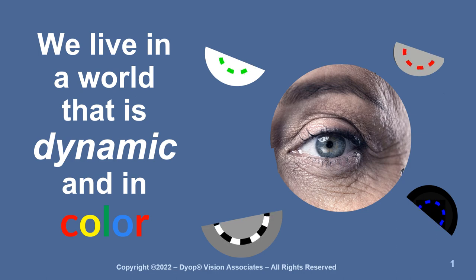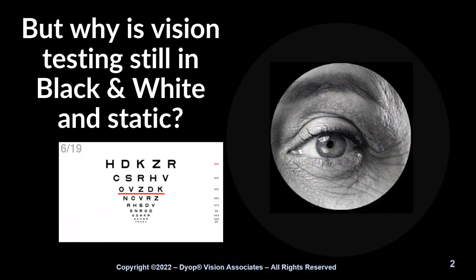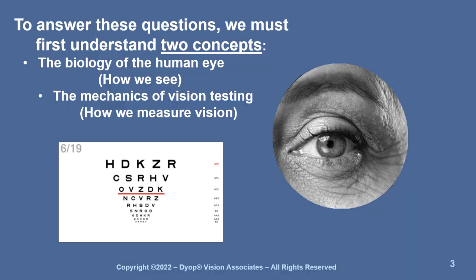We live in a world that is dynamic and in color. But why is vision testing still in black and white and static? To answer these questions, we must first understand two concepts: the biology of the human eye and the mechanics of vision testing.